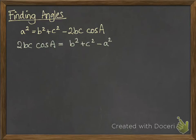We want the cos A on its own so divide through by 2bc and it looks like this. So this is the form of that formula that we want to use if we're looking for an angle.